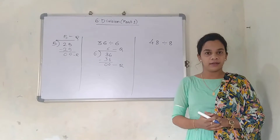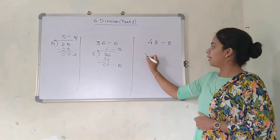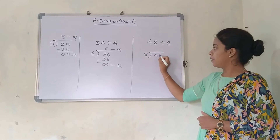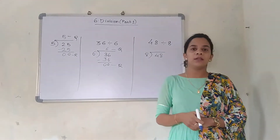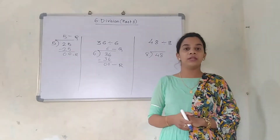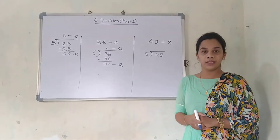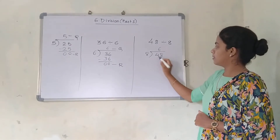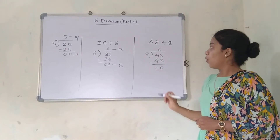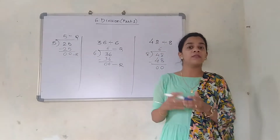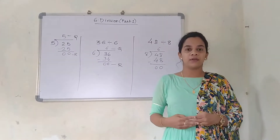The next question is 48 divided by 8. 8 is the divisor and 48 is the dividend. I am going to write 8 here and 48 here. Say the table of 8 till you get 48: 8 ones are 8, 8 twos are 16, 8 threes are 24, 8 fours are 32, 8 fives are 40, 8 sixes are 48. So the answer is 0 remainder. These are a few examples which we studied that day and I have just revised them. Now we will see the next part of this lesson.